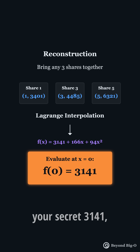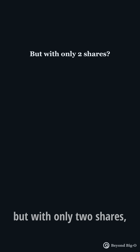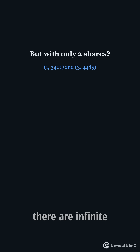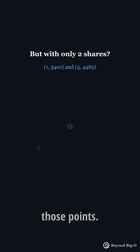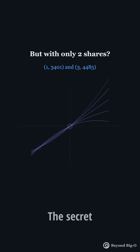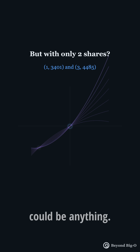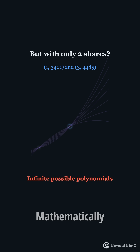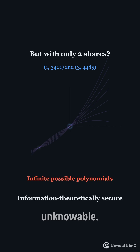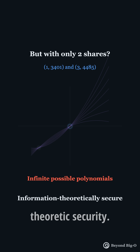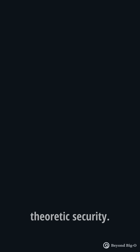3,141. But with only two shares? There are infinite polynomials that could pass through those points. The secret could be anything — not hard to guess, but mathematically unknowable. That's what we call information theoretic security.